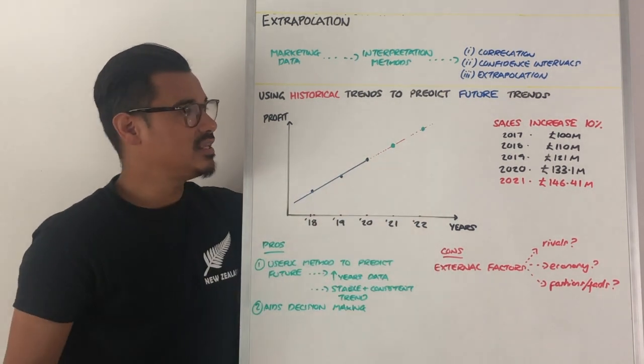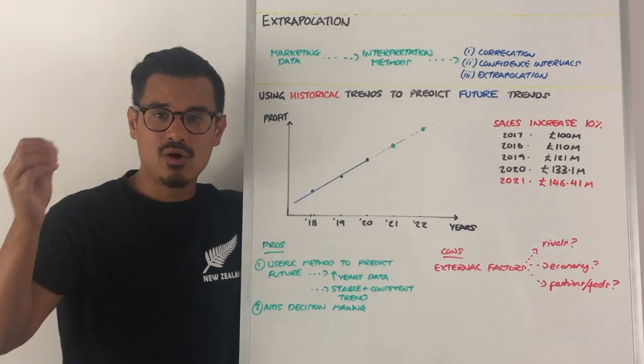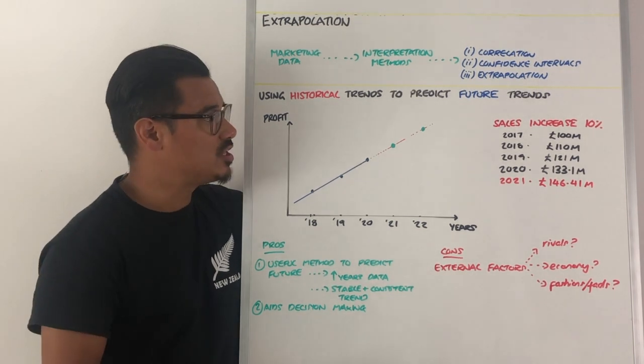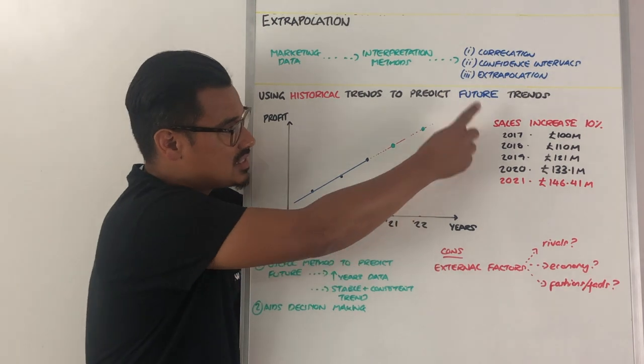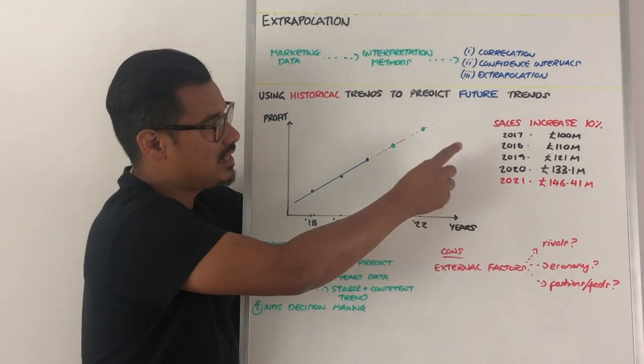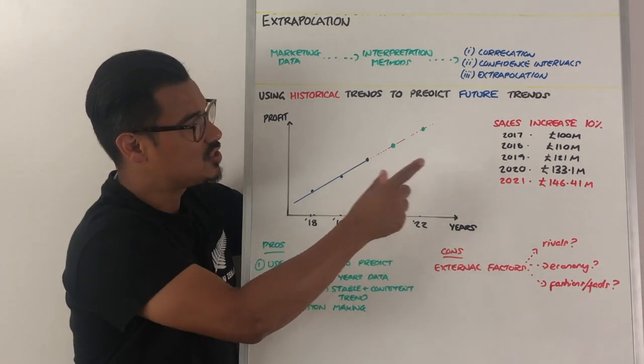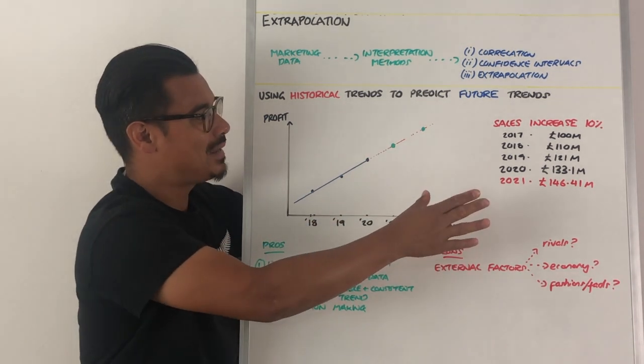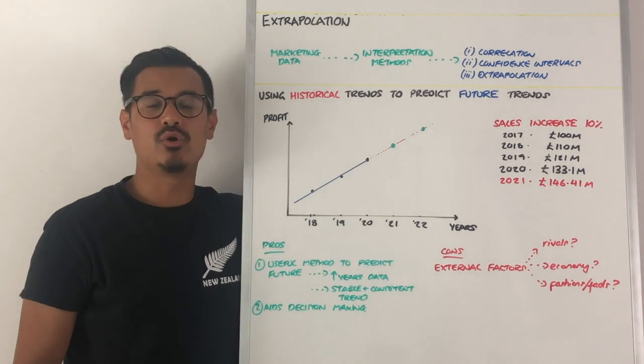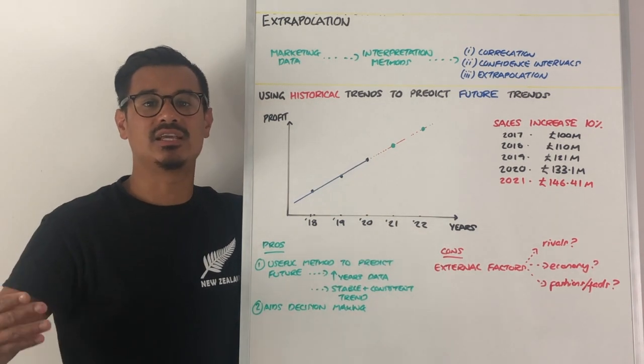Another way is the example over there, where you are a business and your sales have increased 10% year on year for several years. In 2017, they were 100 million, then increased by 10% to 110 in 2018, 2019 to 121 million, and in 2020 to 133.1 million. They're increasing by 10% each year.